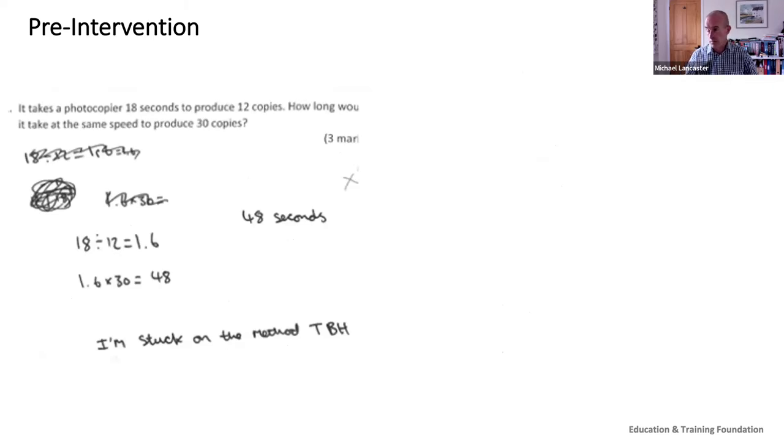Here's another one. Look carefully at the student's first line of working that's been scribbled out. It hasn't quite been scratched from the surface of the earth. You can just make out what they're doing there - one something equals 1.6 something like that. But the best bit for me is the honesty of the student: I'm stuck on the method to be honest.